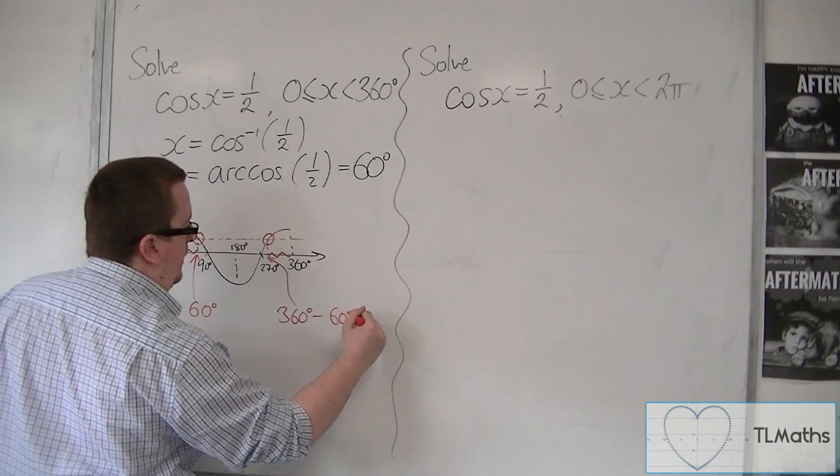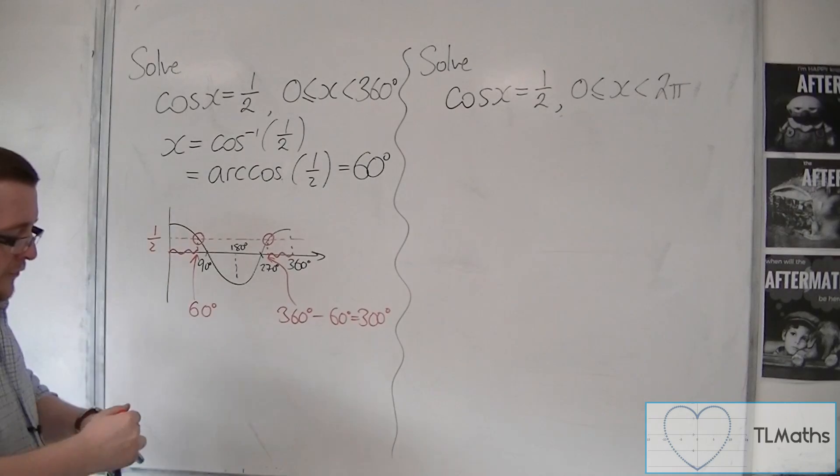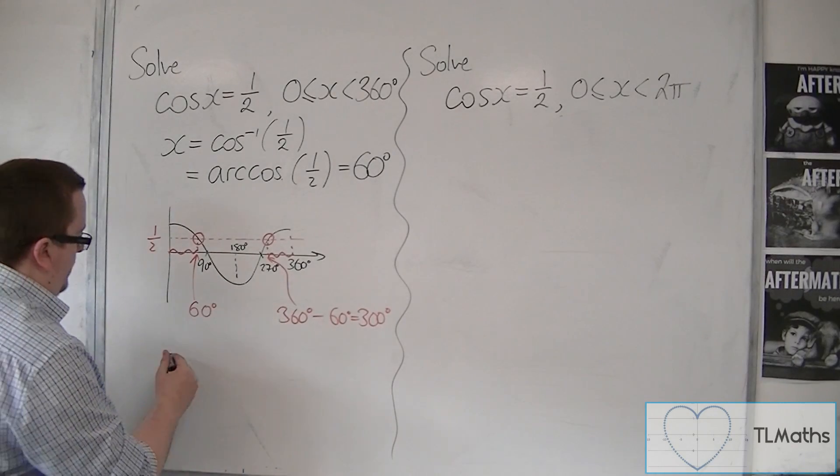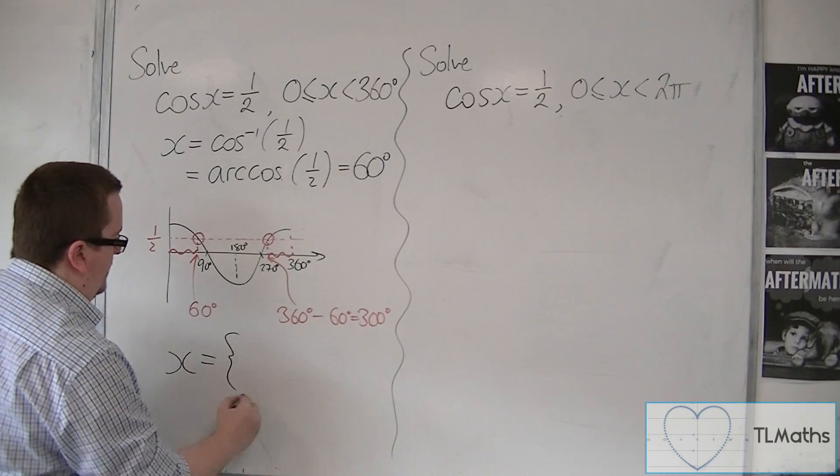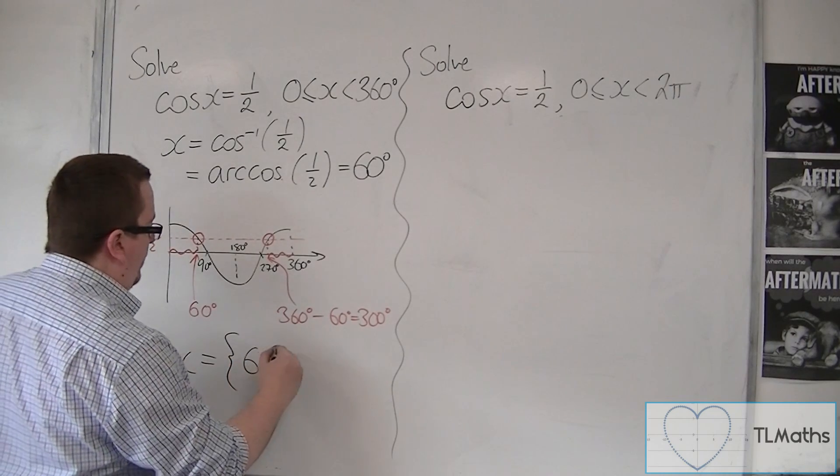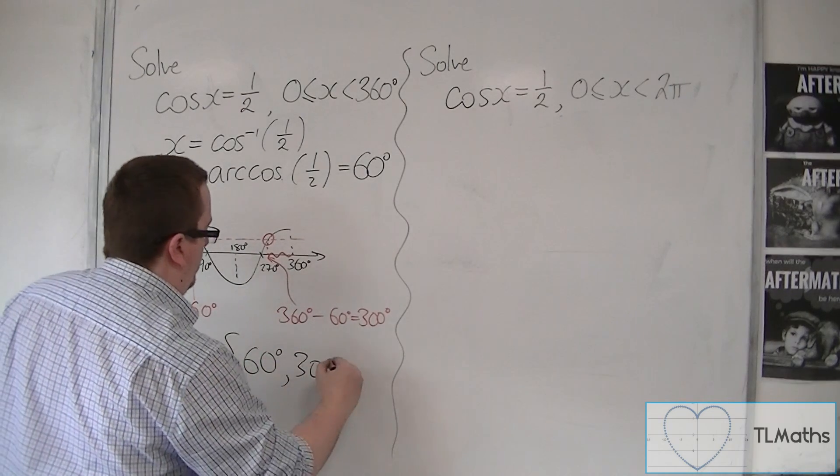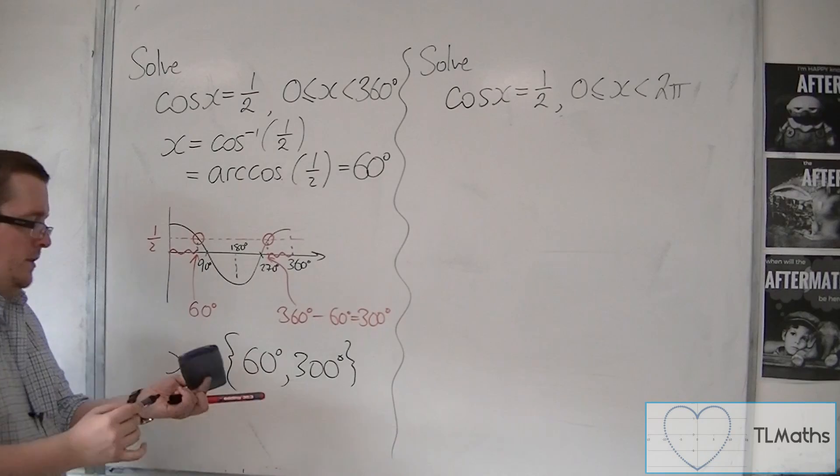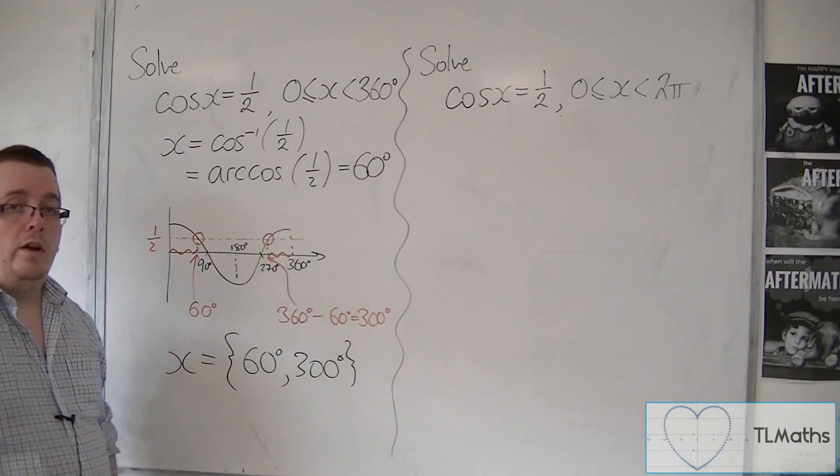And so that's 300. And so there are two solutions between 0 and 360, namely 60 and 300. And that's how we work with it in degrees.